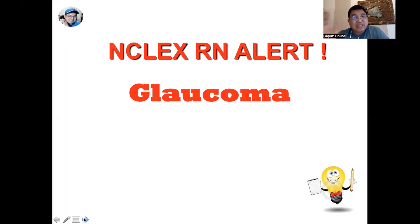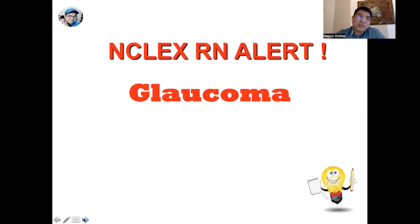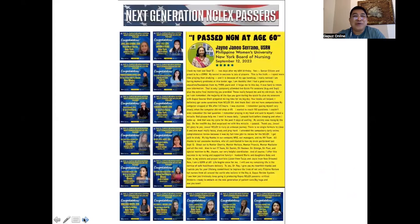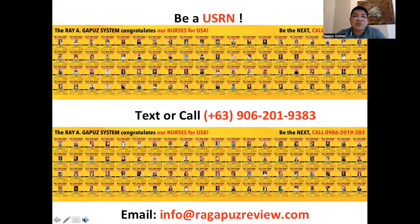Glaucoma has a genetic basis, so it's not a surprise if one parent had glaucoma and their children potentially develop it as they grow older. Glaucoma is not curable, but treatments are available to delay the damage caused by the increased ocular pressure. An example of treatment is administration of carbonic anhydrase inhibitors like acetazolamide. A client with chronic glaucoma is considered stable, so you can delegate the care of that client.